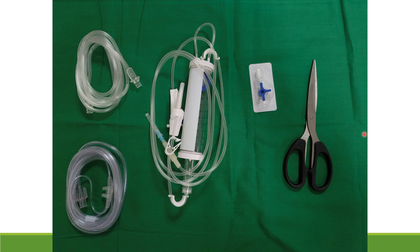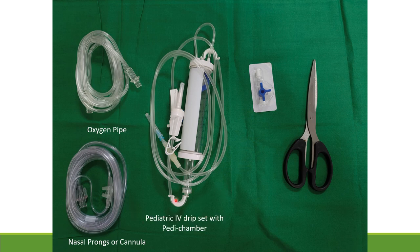What things do we need for making our indigenous CPAP arrangement? We need nasal prongs of appropriate size or a nasal cannula. Second, we need an oxygen pipe. Third, we need a pediatric IV drip set with pedi chamber. Next, we need a three-way stopcock, a pair of scissors, and of course an oxygen source — preferably central oxygen supply, though an oxygen cylinder or oxygen concentrator can also be used.